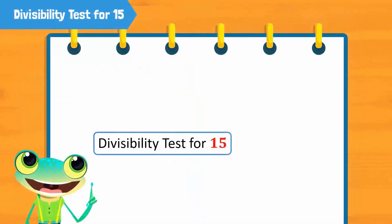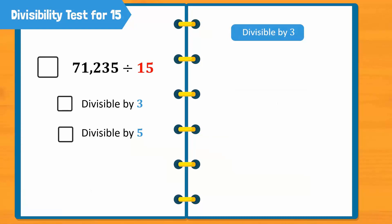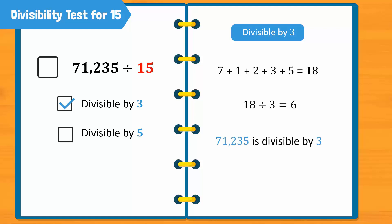Now, let's learn the divisibility tests for 15 and 25. Just like the divisibility test for 12, any number is divisible by 15 if it is divisible by the factors of 15, which are 3 and 5. Let's understand this in detail with an example. Is 71,235 divisible by 15? First, let's check if this number is divisible by 3. The sum of its digits is 18. Since 18 is divisible by 3, we know that 71,235 is also divisible by 3.